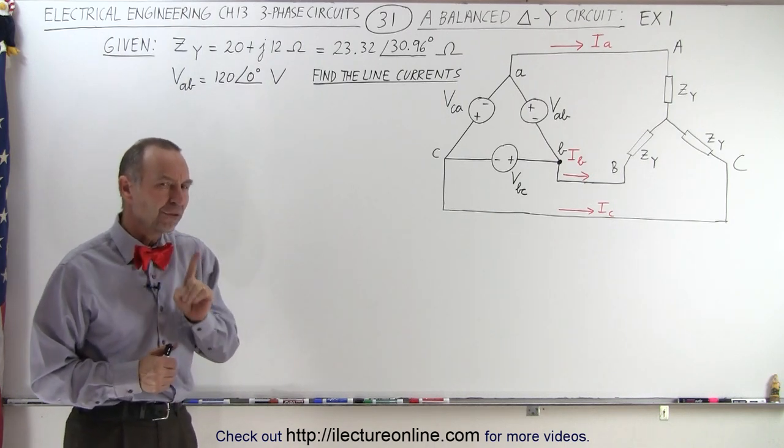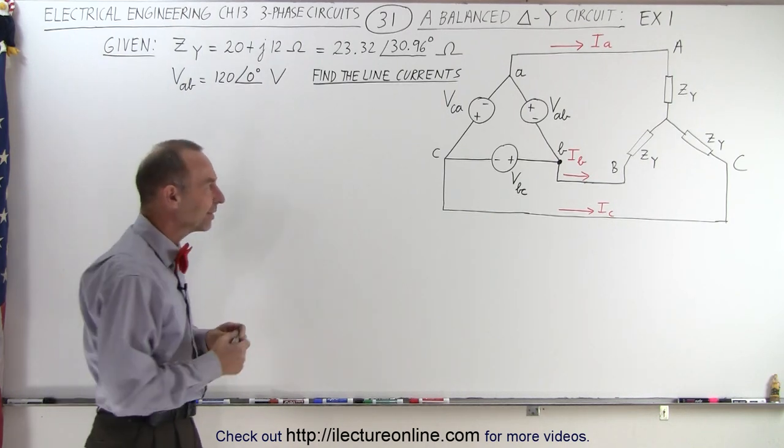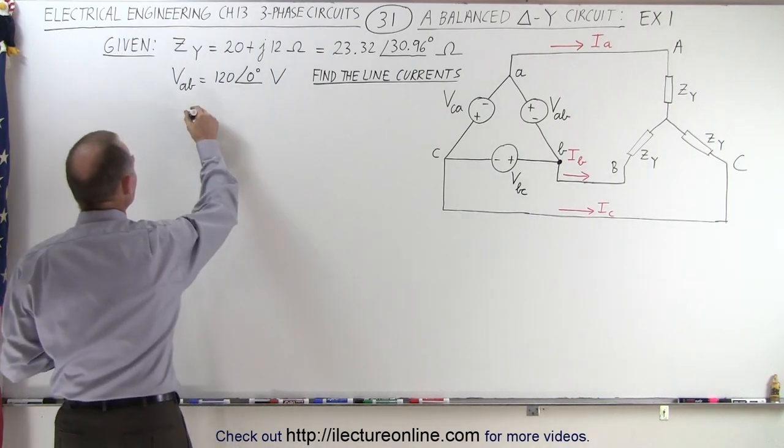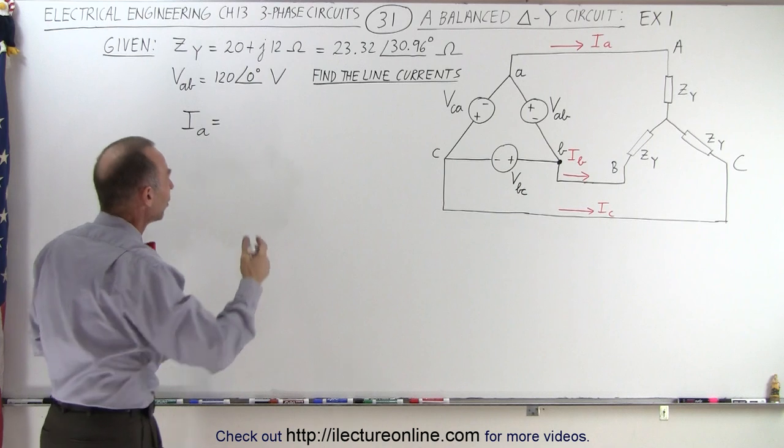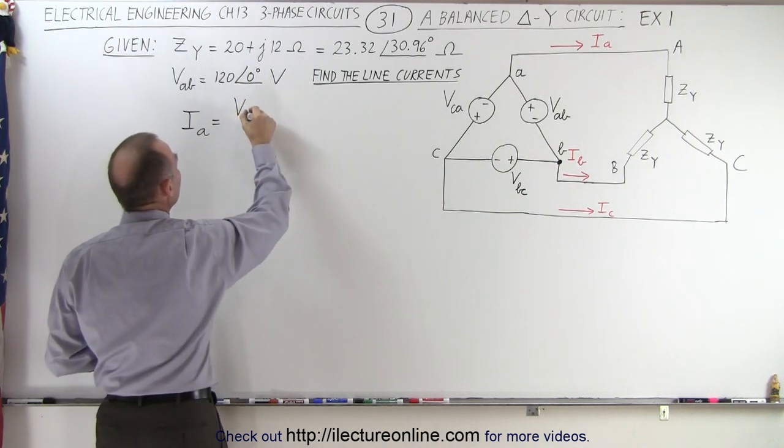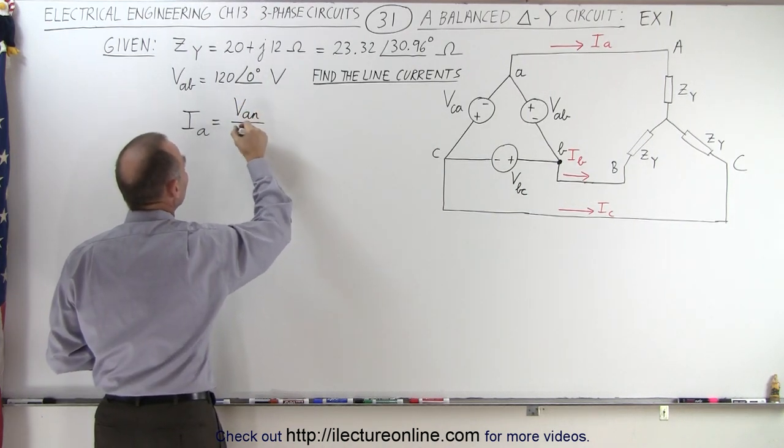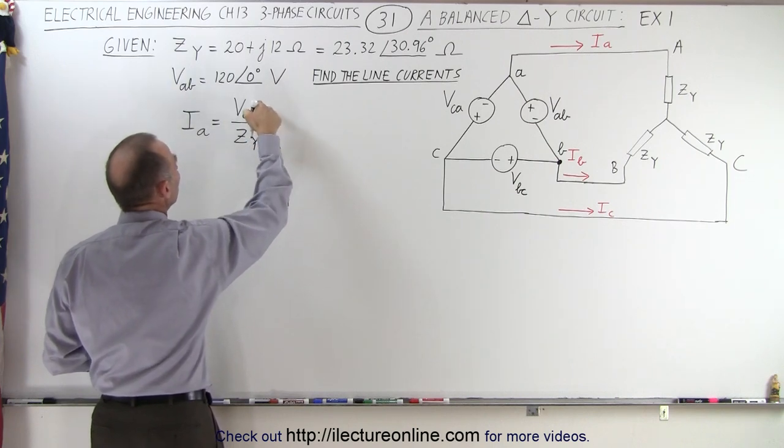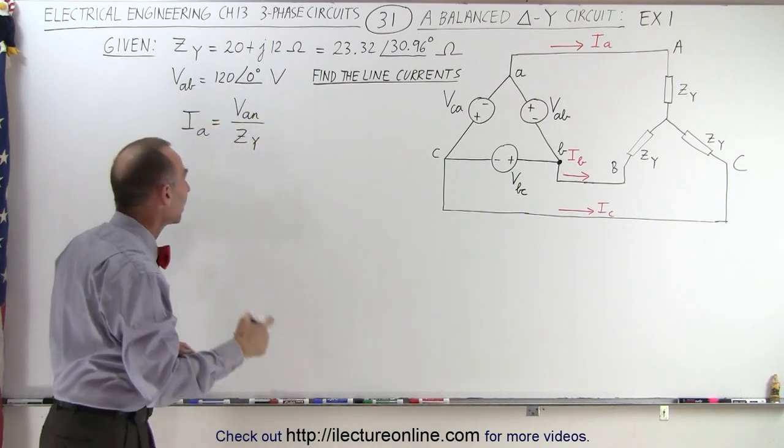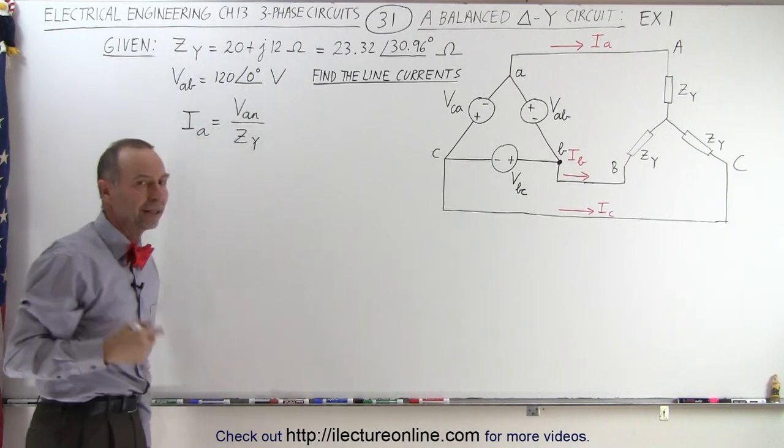Well, remember in the previous video we found that the line current I sub A can be found from the equivalent circuit to be equal to Van divided by the impedance. And so if we find a relationship between Van and Vab, we can then plug that in here and find the line current.